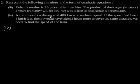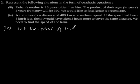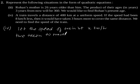Now the fourth part. A train travels a distance of 480 km at a uniform speed. If the speed had been 8 km per hour less, then it would have taken 3 hours more to cover the same distance. We need to find the speed of the train. Let the speed of the train be x km per hour. So, time taken to travel 480 km will be 480/x hours.